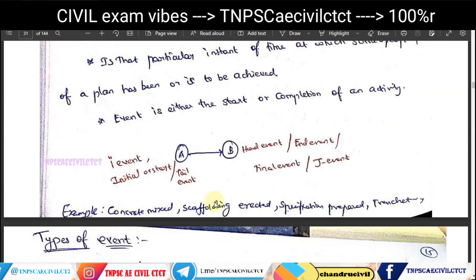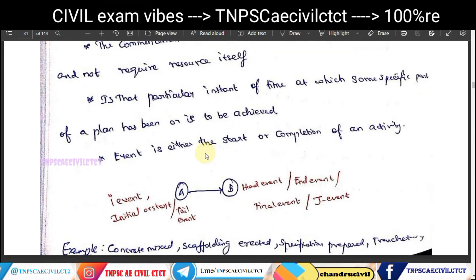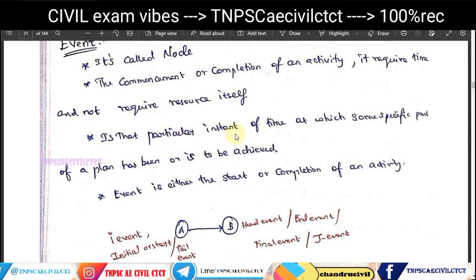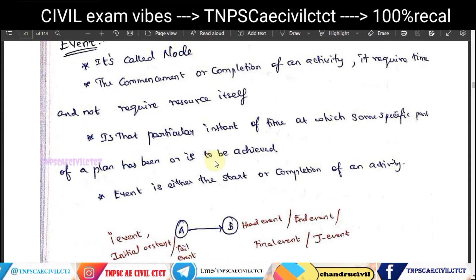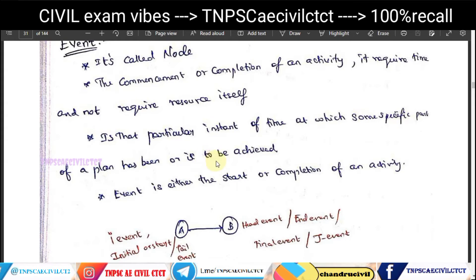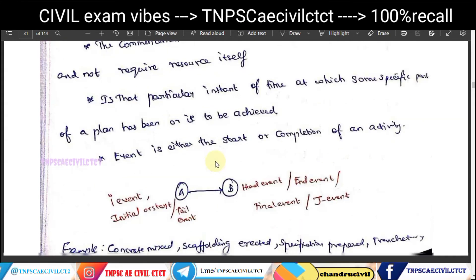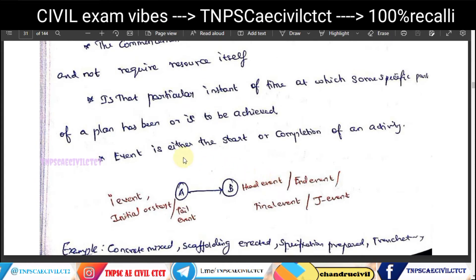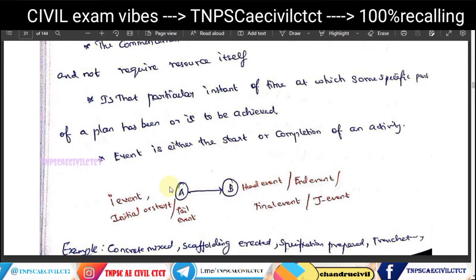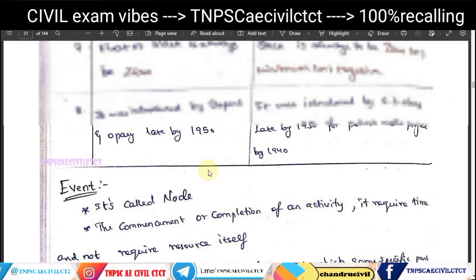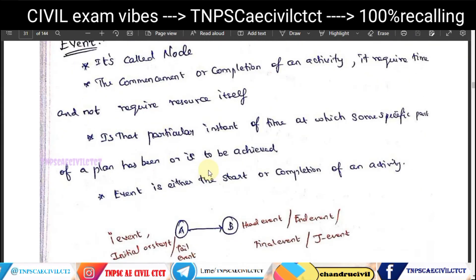An event is an instant of time at some specific part of the plan — a particular timing representing the process of completion. It is the result of the completion of an activity.